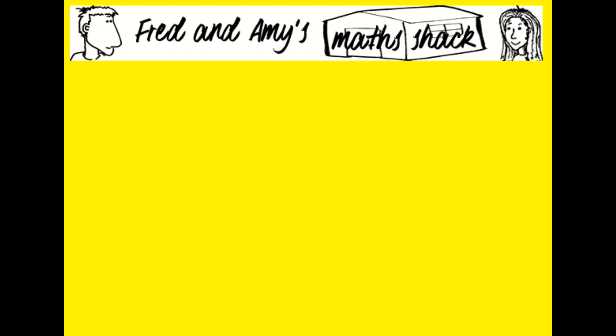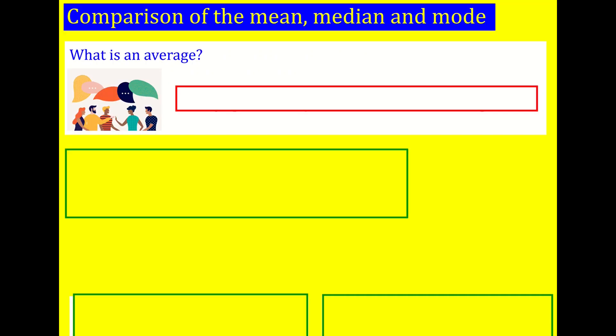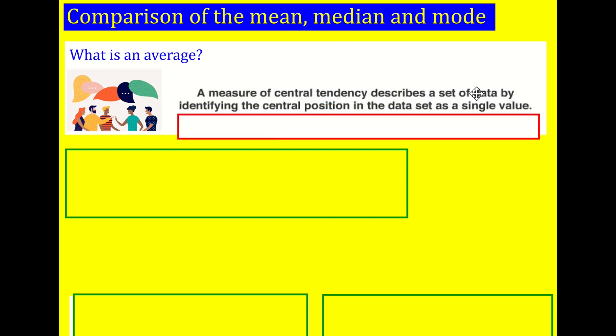Welcome to Fred and Amy's Math Shack. We're going to start the idea of measures of location today, and essentially that is the same as an average. So what I want you to think about, pause the video, is what is an average? Because sometimes the mean is known as the average, but actually it's not. Mean, median and mode are all examples of averages, and what they are are different ways of measuring the central tendency or identifying essentially the central position in a data set using just a single value.